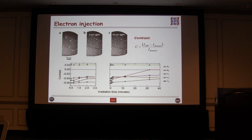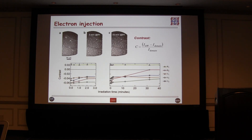If we increase the voltage further, electrons have sufficient energy to penetrate into the sample — in other words, we can inject negative charge into the near-surface region of the sample. After increasing the start voltage to 8 volts, electrons start penetrating into the sample; we know how many because we know what the emission current is. After something like half an hour, we've injected a lot of electrons and, looking carefully, the contrast has changed.